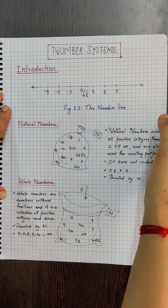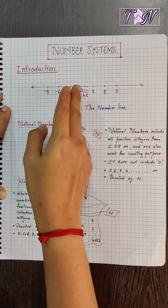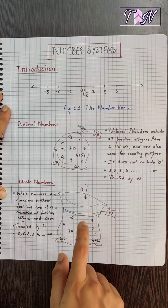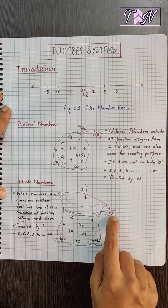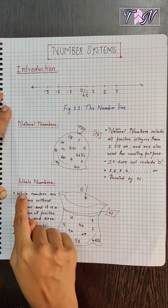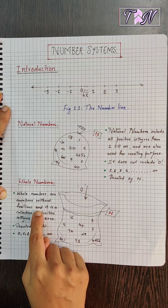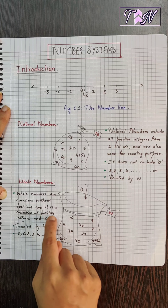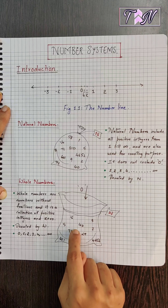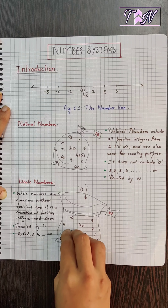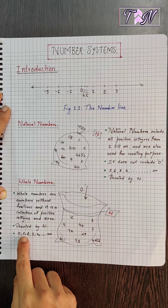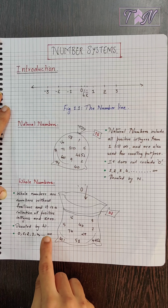Imagine you come back to the point 0 and collect it, putting it in the same bag. Now this bag is tagged as W, which represents whole numbers. The definition for whole numbers is: whole numbers are numbers without fractions and are a collection of positive integers and 0. So you take the positive integers and add 0 to the same bag. This collection is called whole numbers, denoted by W, starting with 0, 1, 2, 3, 4, and so on till infinity.